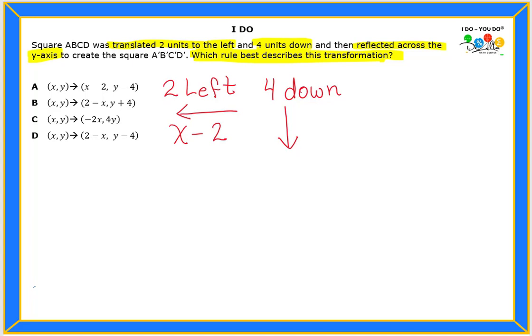So vertical line, it's going to be tied or related with the y-axis. So this will be y minus four, and it's minus four because it went down, right? So the first rule will be something like this, x minus two, y minus four.